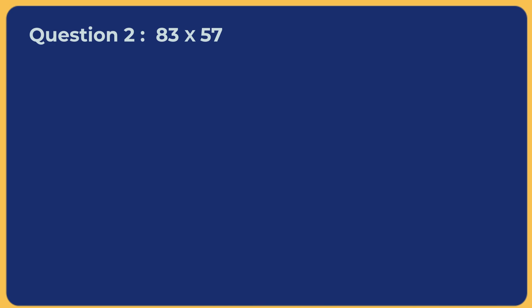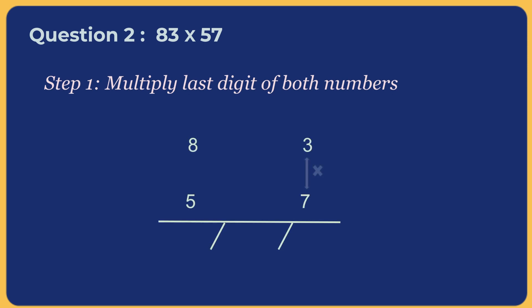In this one, we have to multiply 83 by 57. So, multiplying last digits of both numbers, 3 and 7 gives us 21.